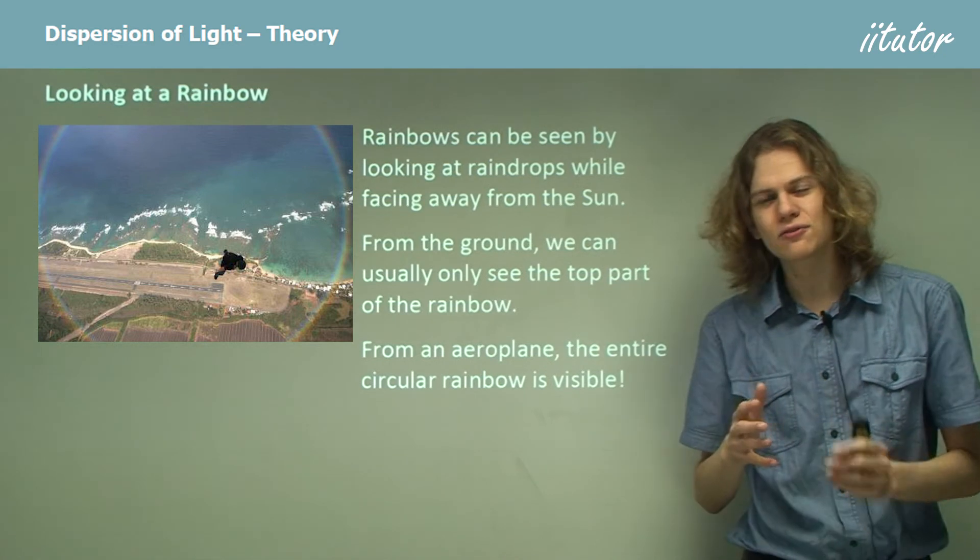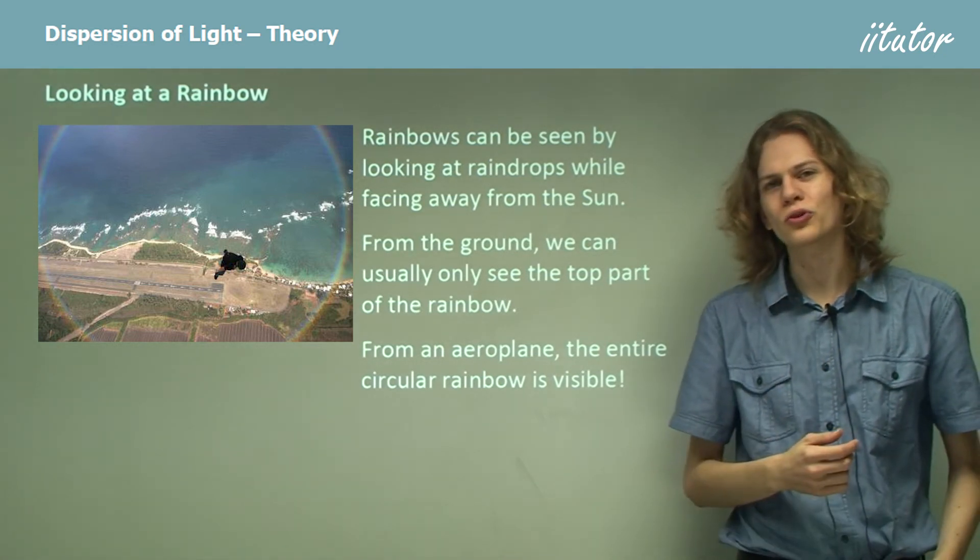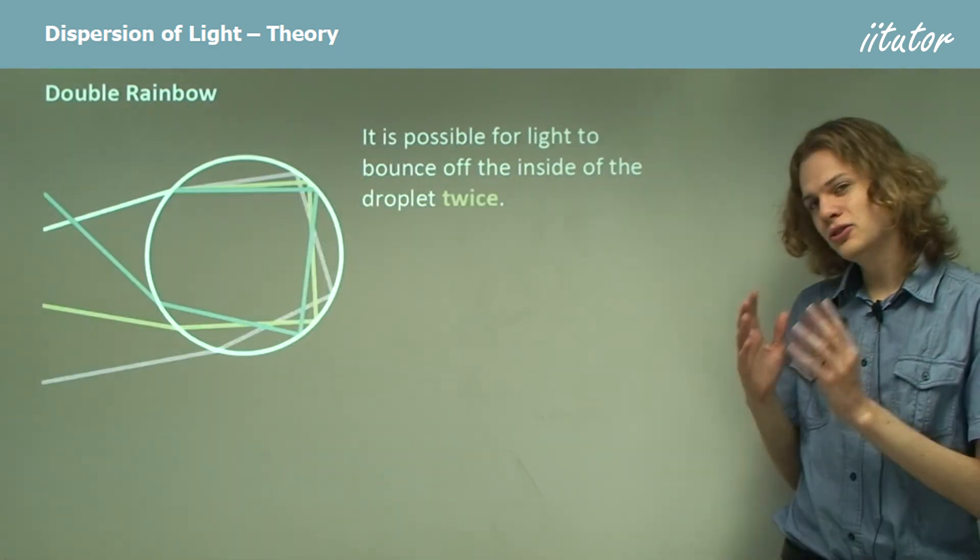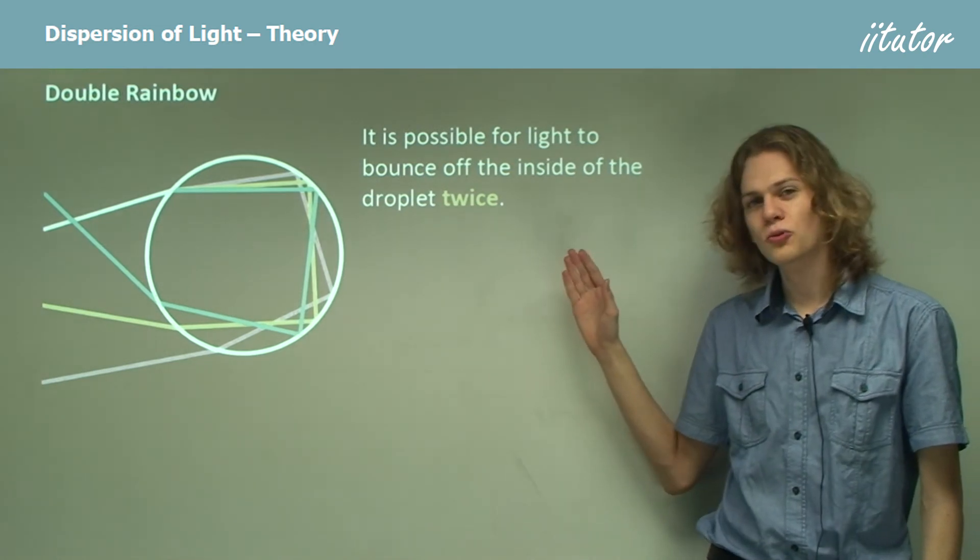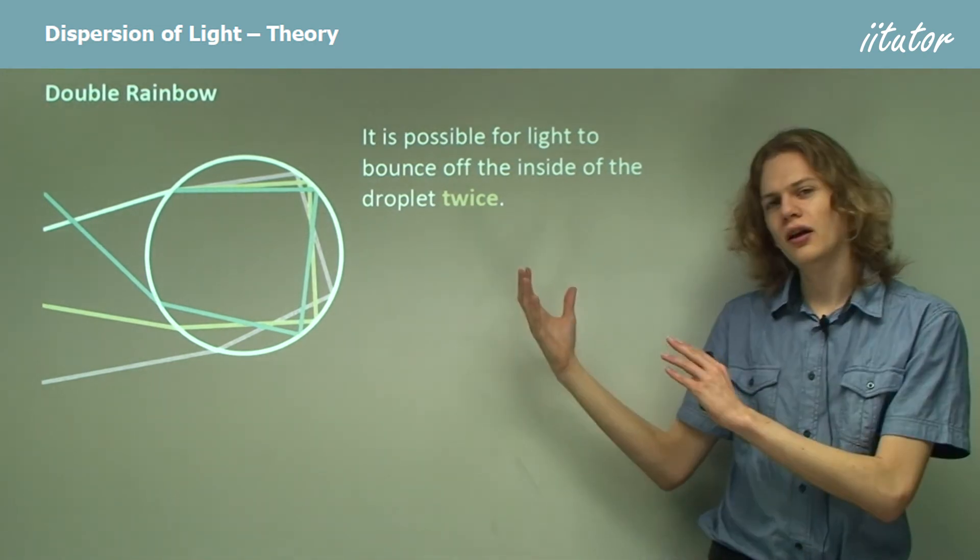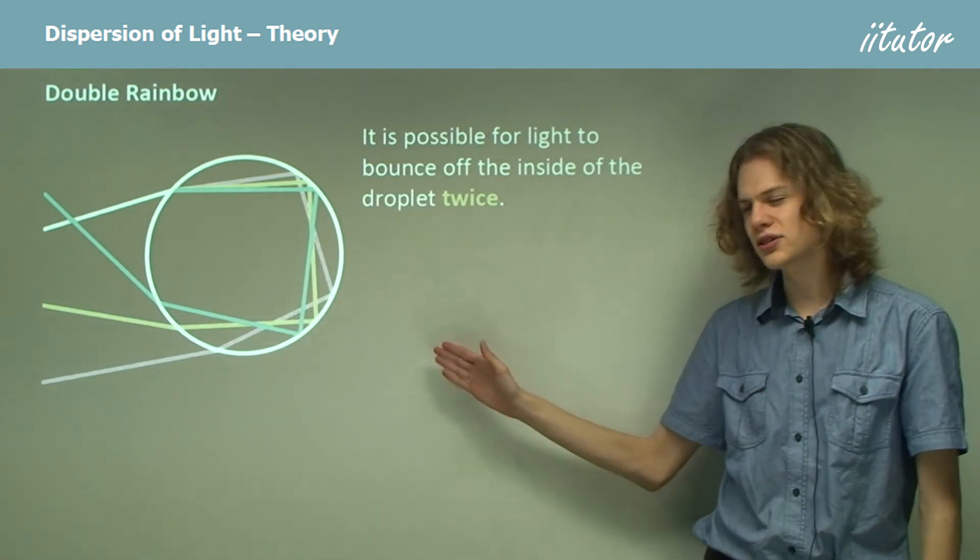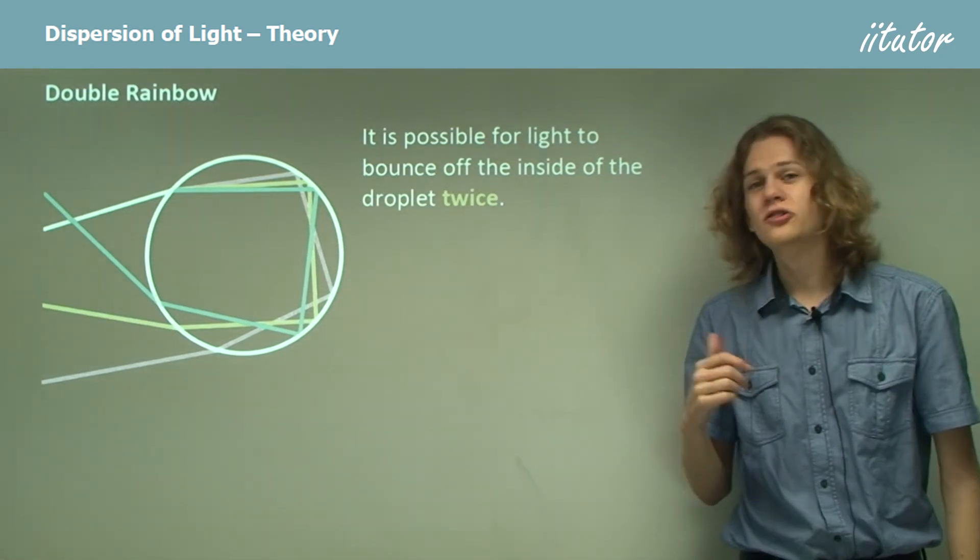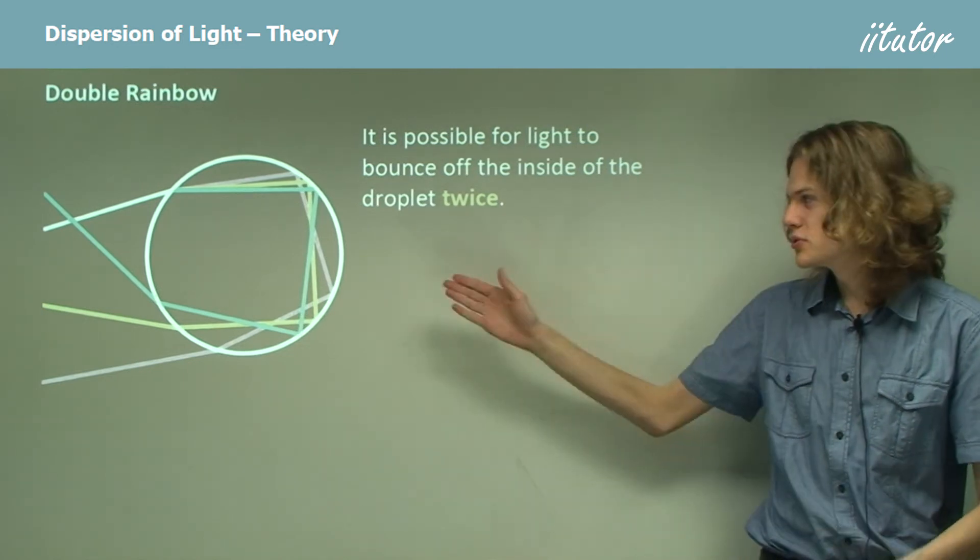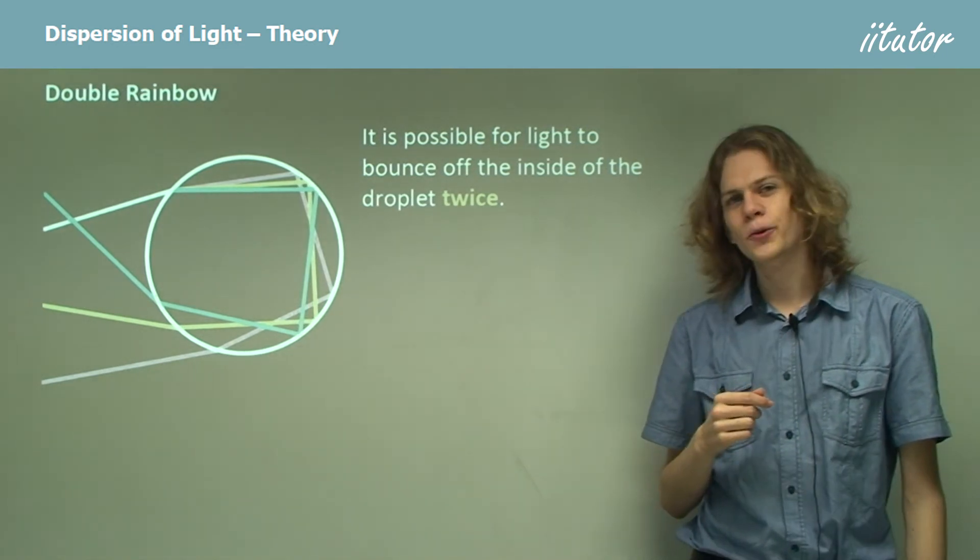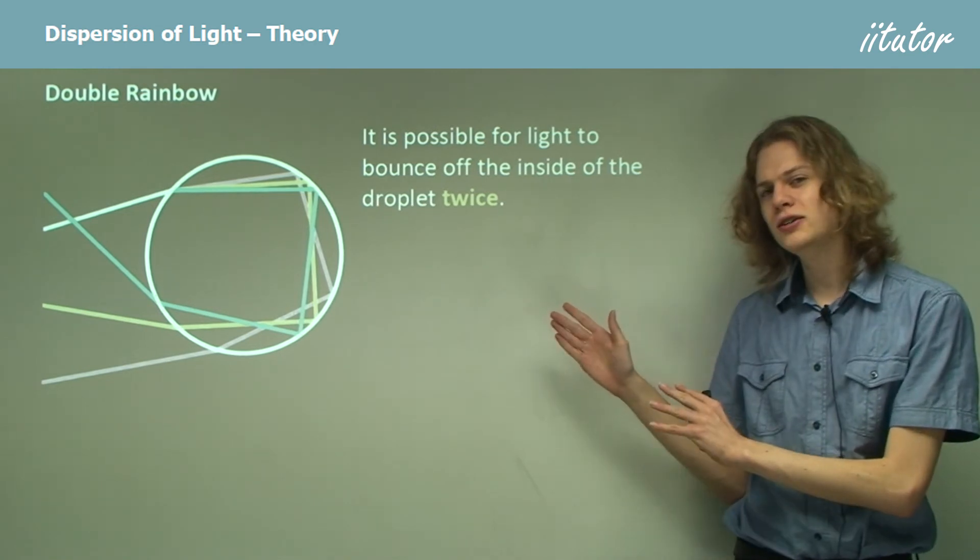However, of course, this only applies if you can see the whole circle of water vapor. Now, it turns out if we have the light traveling at the right angle, then we can have the sunlight bounce off the inside of the droplet twice before it exits the droplet. And that's exactly what's happening over here. This doesn't happen quite as often as just a single bounce refraction. And so any sort of rainbow formed by this will be a bit fainter.